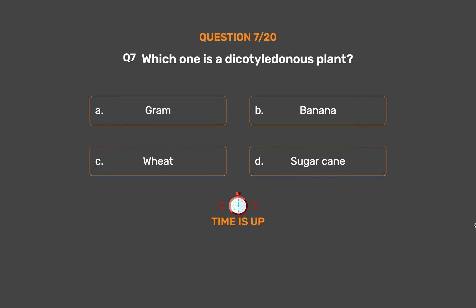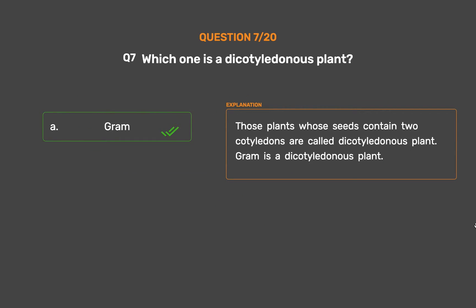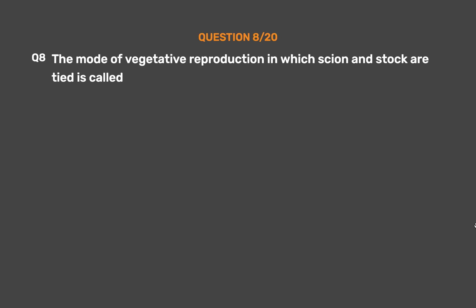The correct answer is Option A – Gram. Those plants whose seeds contain two cotyledons are called dicotyledonous plants. Gram is a dicotyledonous plant.